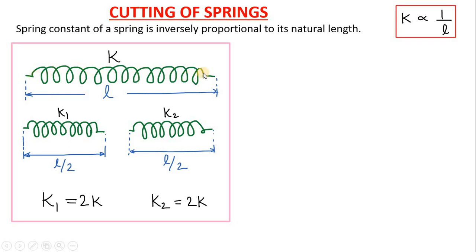Let us say we have a spring of spring constant K whose length is L. This spring is cut into two pieces. Let us say they are cut into two equal halves, L by 2 length and L by 2 length. Their spring constants are K1 and K2.